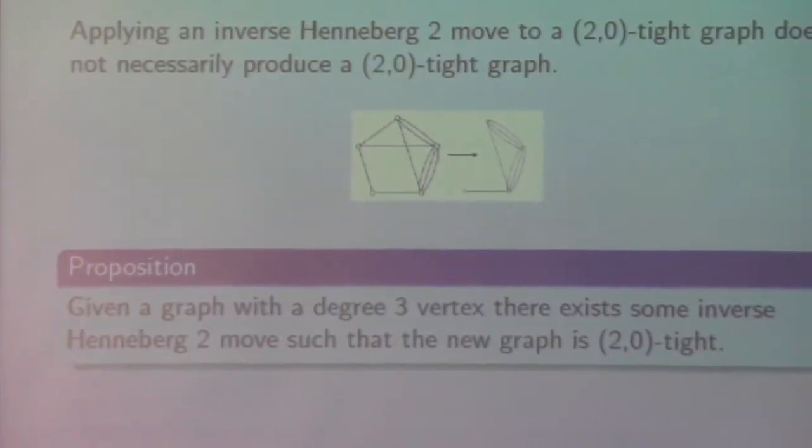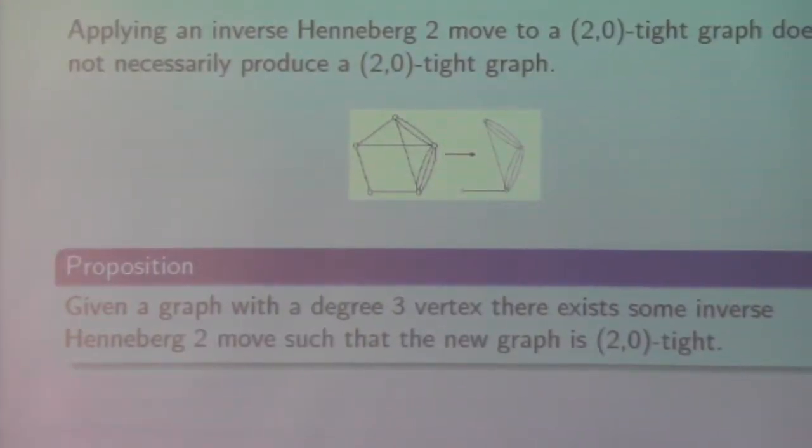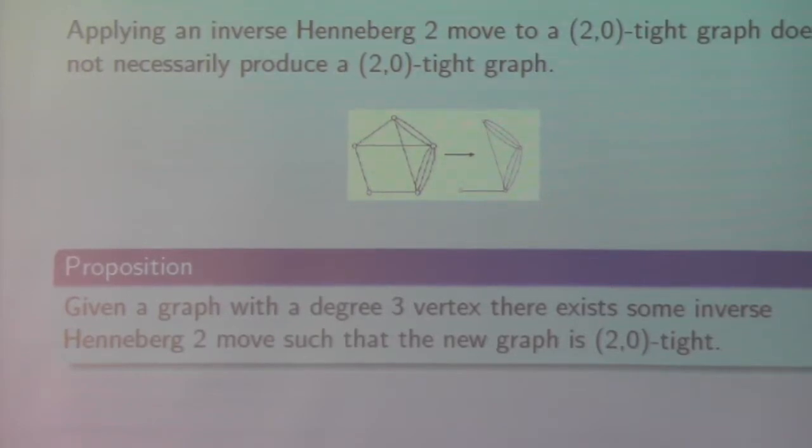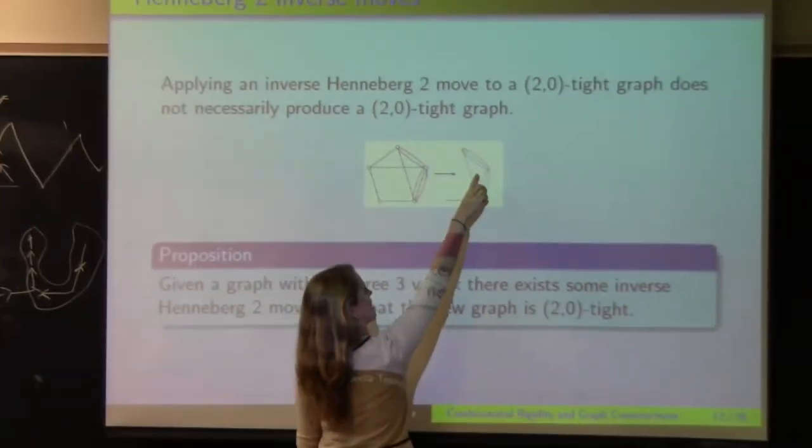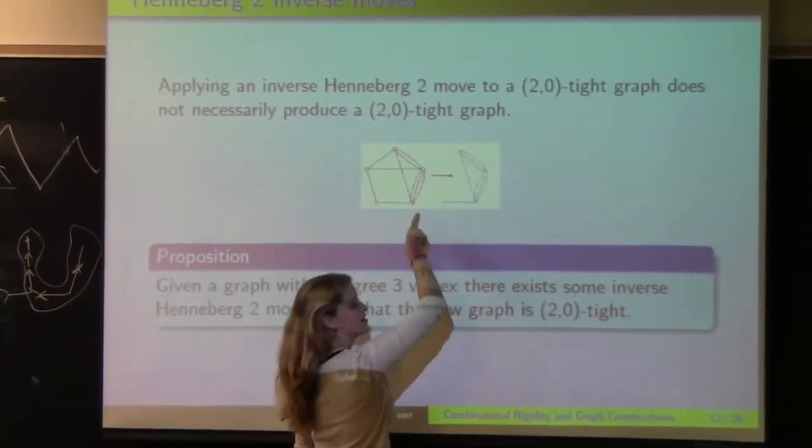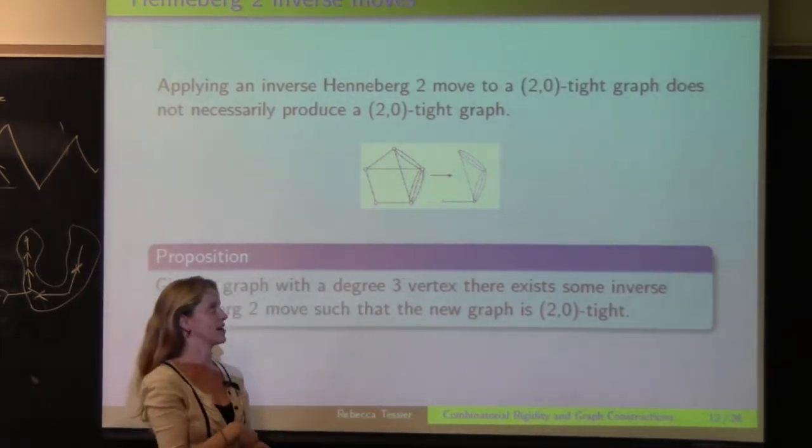However, one of the propositions I looked at this summer is that given a graph with a degree 3 vertex, there always exists some inverse Henneberg 2 move that you can do on the graph. So for example, this move is not allowed, but if you were to take this edge and add it in as a triangle here, that would be an allowed 2-0-tight graph.